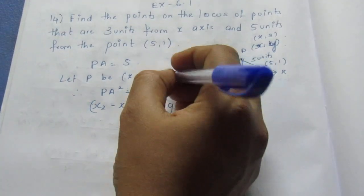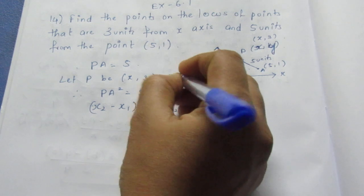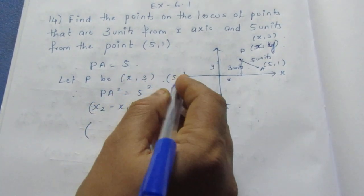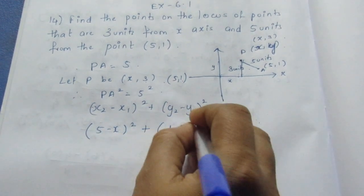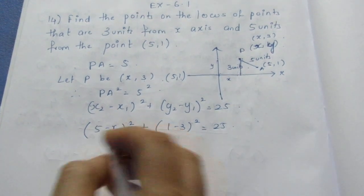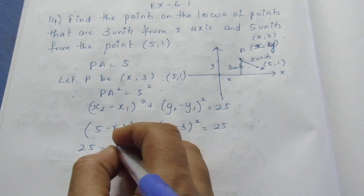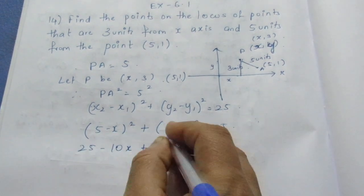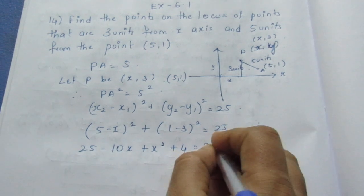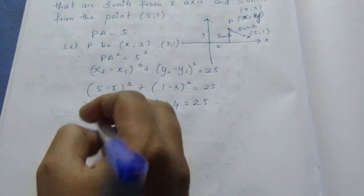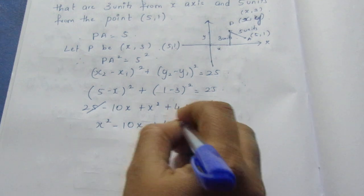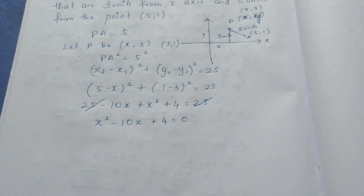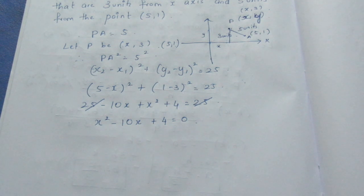Now point A is (5,1). Distance formula: x₁,y₁ = P(x,3) and x₂,y₂ = A(5,1). So (5−x)² + (1−3)² = 25. Expanding using (a−b)² formula: 25 − 10x + x² + (−2)² = 25. That is, (−2)² = 4. So x² − 10x + 25 + 4 = 25.